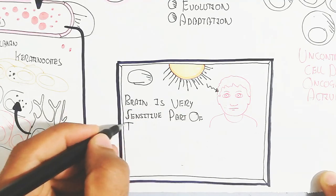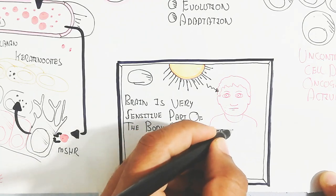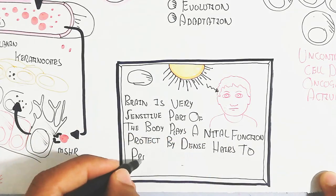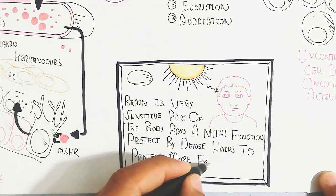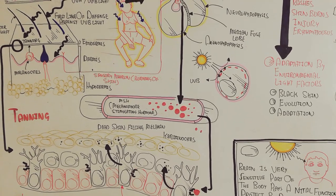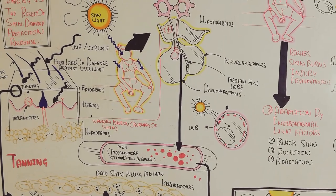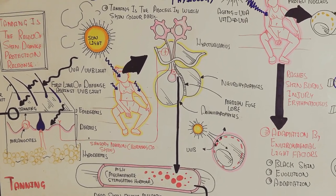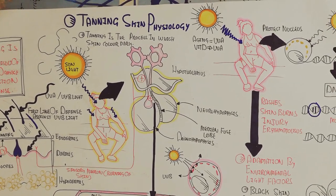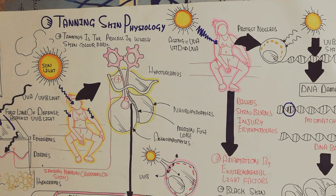As a side note, the brain is a very sensitive part of the body. It is protected by dense, dark hairs which absorb more light. People in high UV regions tend to have darker hair color due to the need for greater protection against UV radiation. This video covered skin tanning physiology and protection against UV radiation.